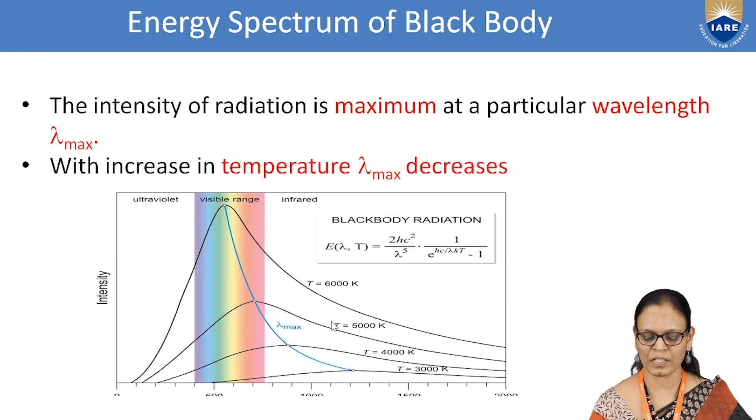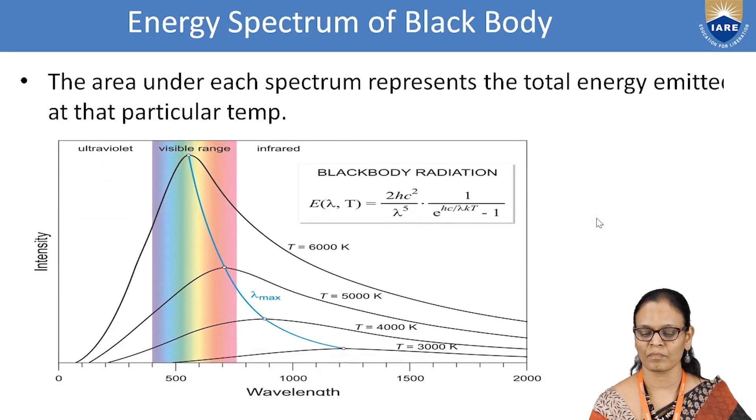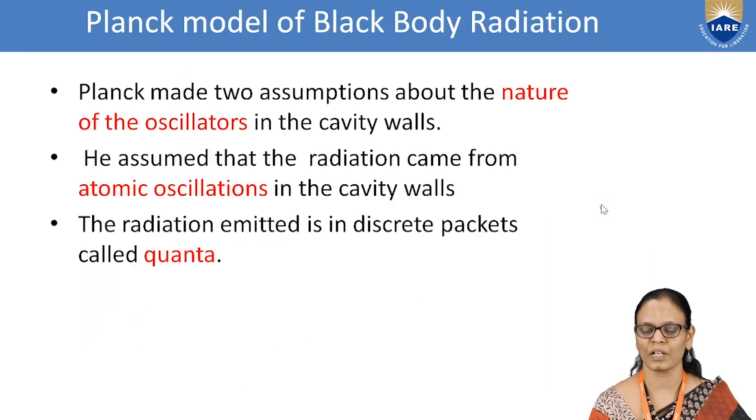What we notice here is, as the temperature increases, lambda maximum shifts towards the left. If we want to calculate the total amount of energy that is emitted at a particular temperature, the area under the curve gives the energy emitted at that particular temperature. The area under this particular curve T is equal to 300 Kelvin, we can calculate the area. And at T is equal to 6000 Kelvin, we can calculate the area, which shows that as the temperature increases, the amount of energy that is emitted also increases.